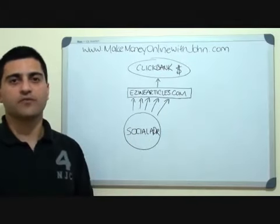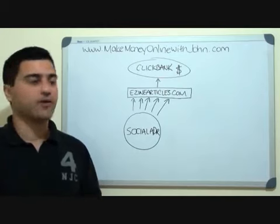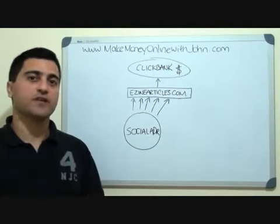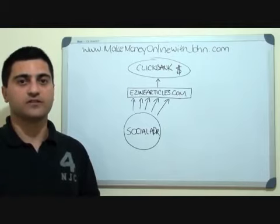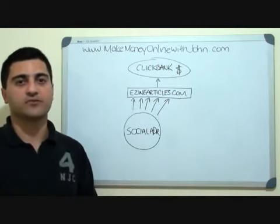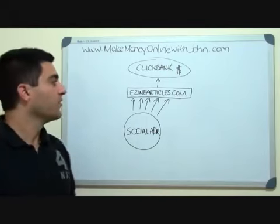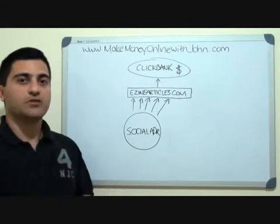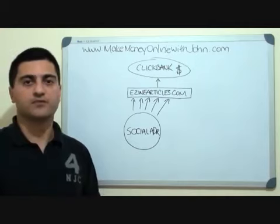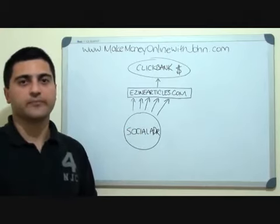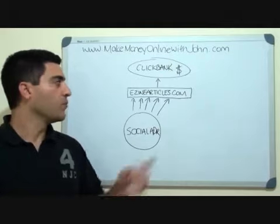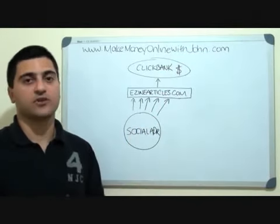We've got our Clickbank product that we've chosen that we know is convertible. It's got a high gravity. We've looked up what keywords we can target that have high traffic and low competition so we can easily rank in Google for those keywords related to that product. And what we've done is we've grabbed one of those keywords and created an article and submitted it to ezinearticles.com because that can rank really quickly on that directory. Then to make sure we do rank really well, we're going to get backlinks to our article and we're using Social Ladder, a free social bookmarking tool to get lots of backlinks to our ezinearticle. What I want to reveal to you today is a great site that you can use free to get more backlinks to your ezinearticle and direct backlinks to your Clickbank product.